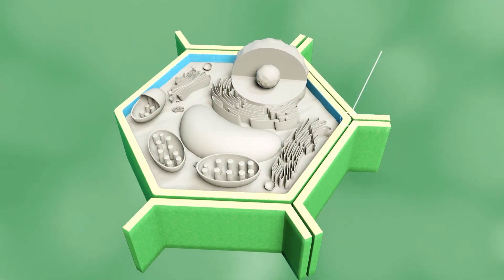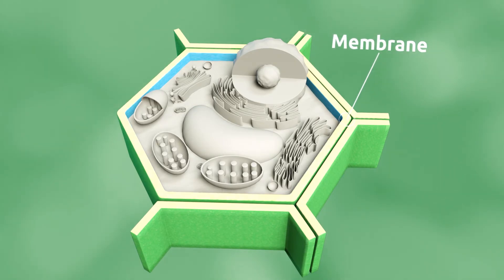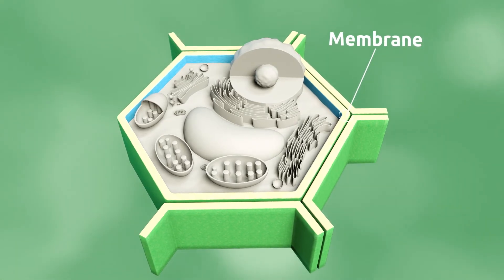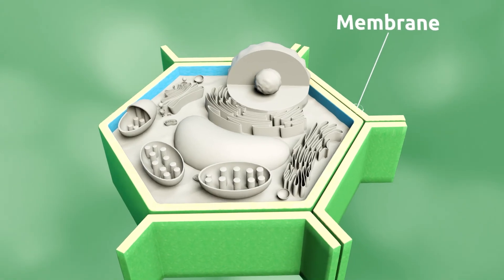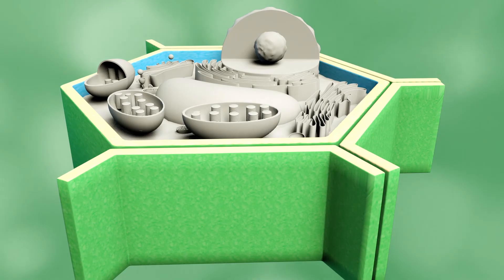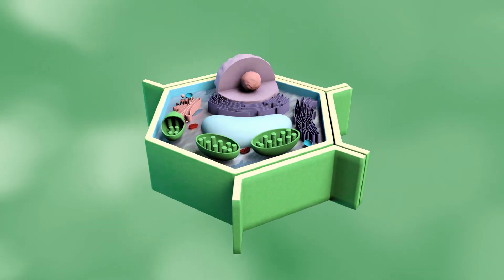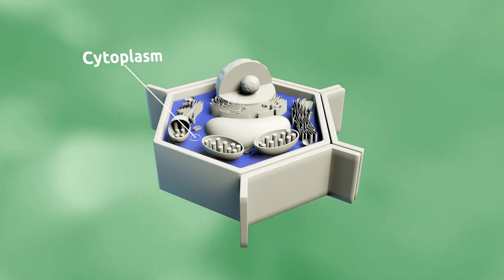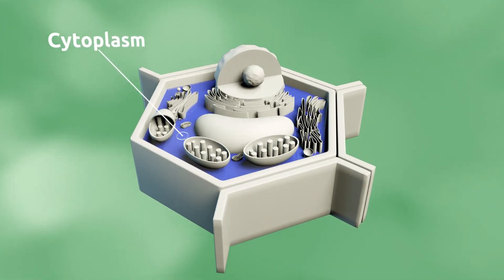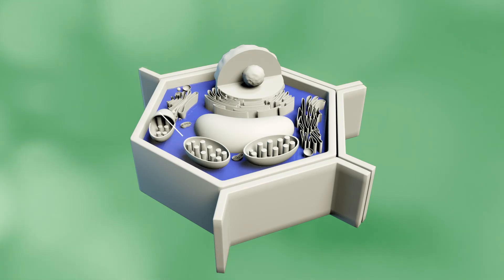The membrane surrounds and protects the plant cell from the outside environment, allowing food in and releasing waste substances. Plant cell membranes also have rigid cell walls which hold up the plant. The cytoplasm is a thick solution found inside the membrane where organelles are located.